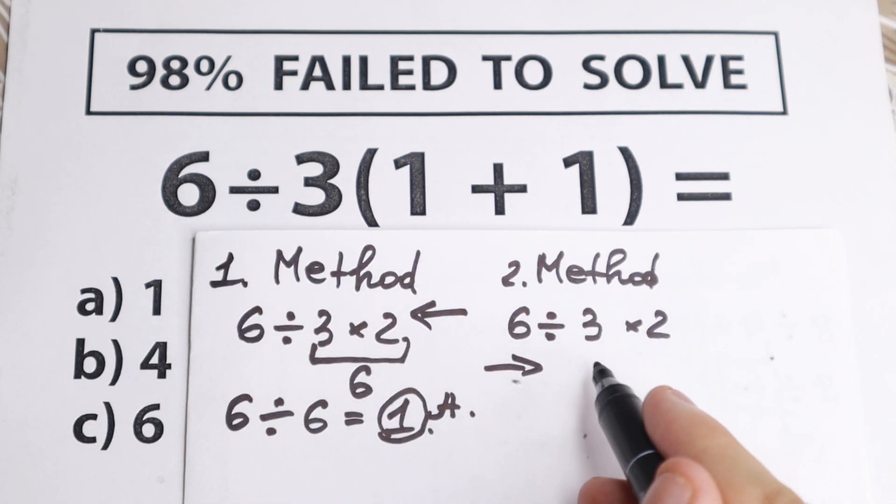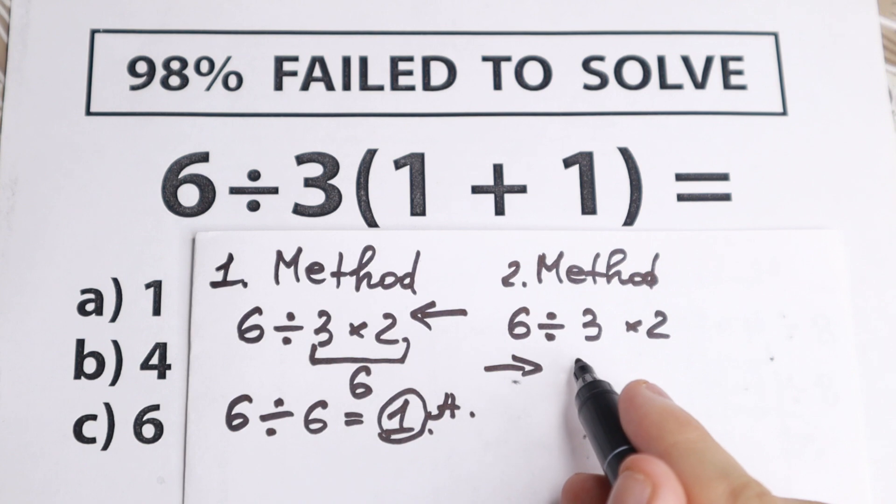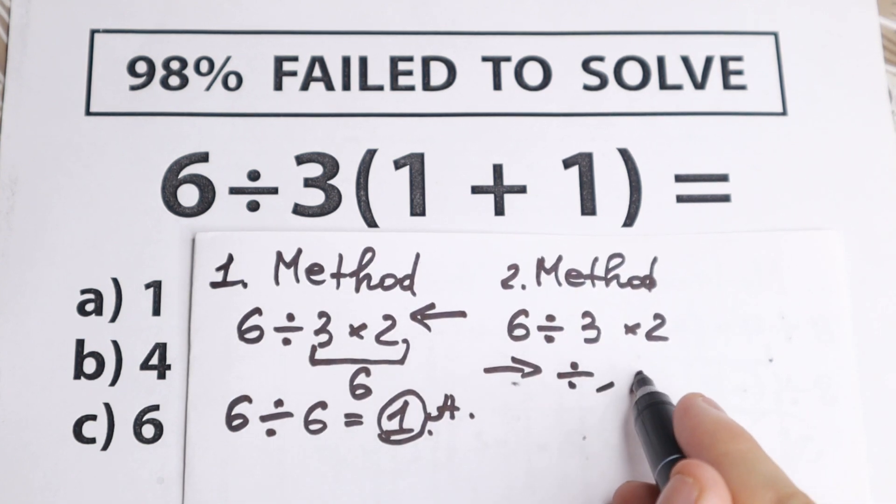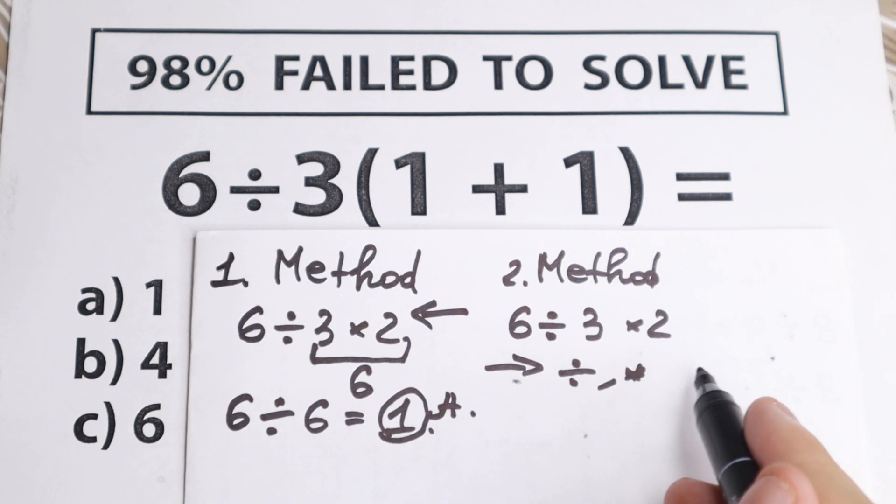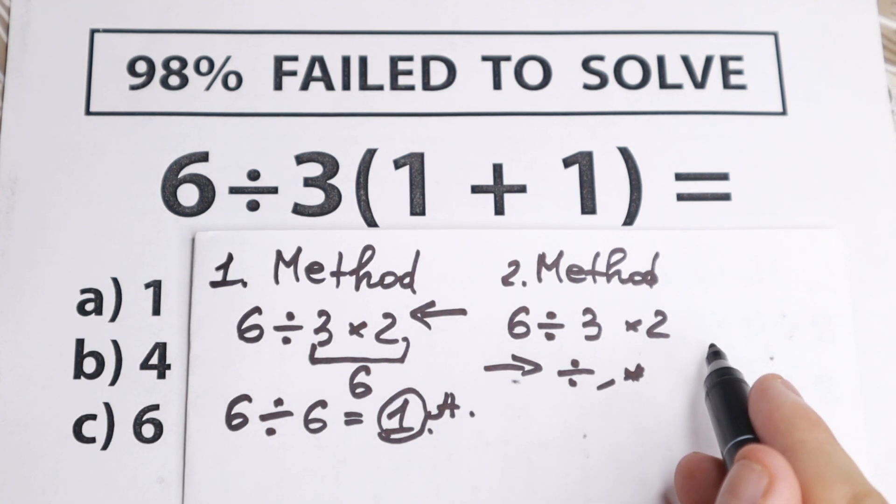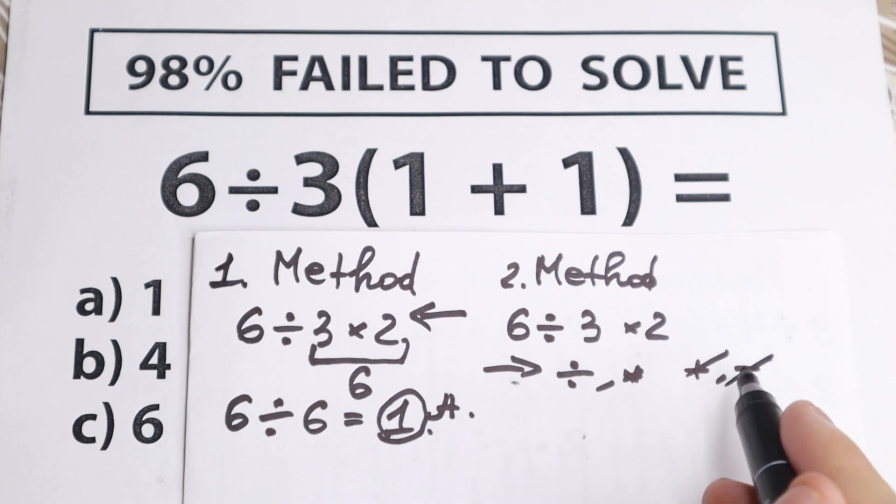Why we go from here? Because we still have only division and multiplication, so there is no addition and subtraction. So if we have a situation like that, if you don't have addition, if you don't have subtraction right here, so you need to go from left to right.